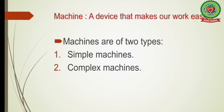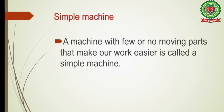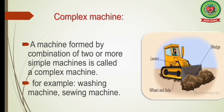Note down the definition: a machine is a device that makes our work easier. Machines are of two types — simple machines and complex machines. A machine with few or no moving parts that makes work easier is called a simple machine. A machine formed by a combination of two or more simple machines is called a complex machine — for example, a washing machine, sewing machine, or a JCB, which combines wedges, levers, and wheel and axle.